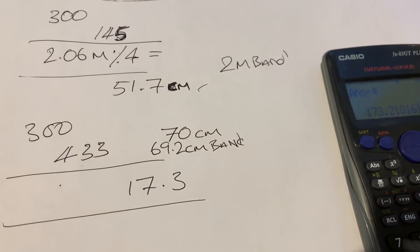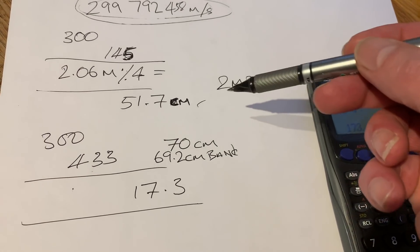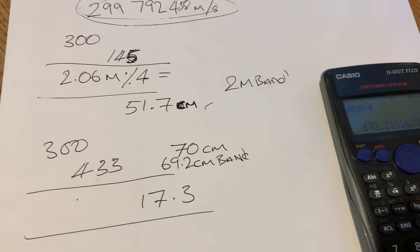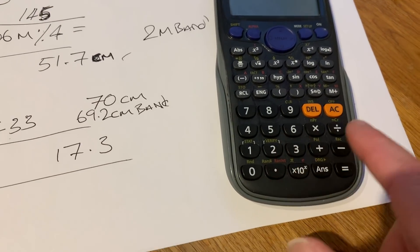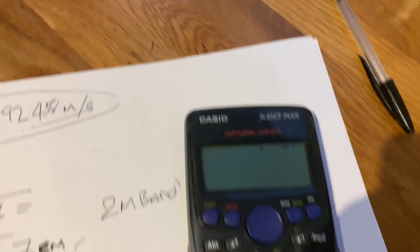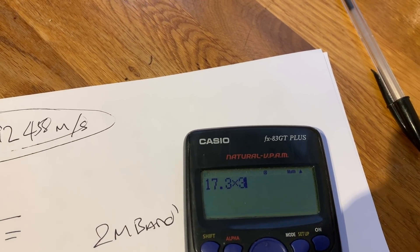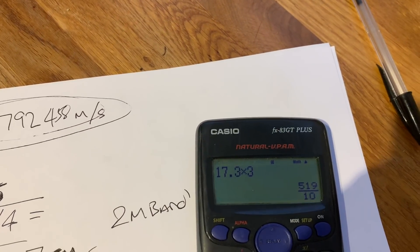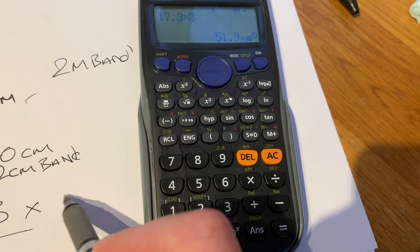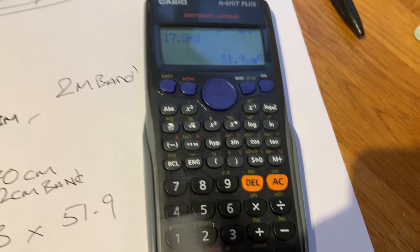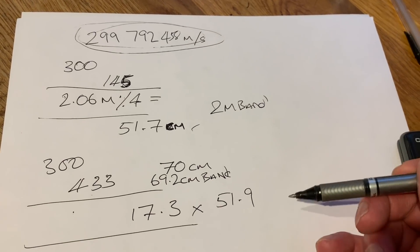Still don't understand how that can work, but if we just times it by three: 17.3 times by three equals 51.9. So a two meter antenna is actually a three quarter wave on 70 centimeters. Now we're getting a relationship.